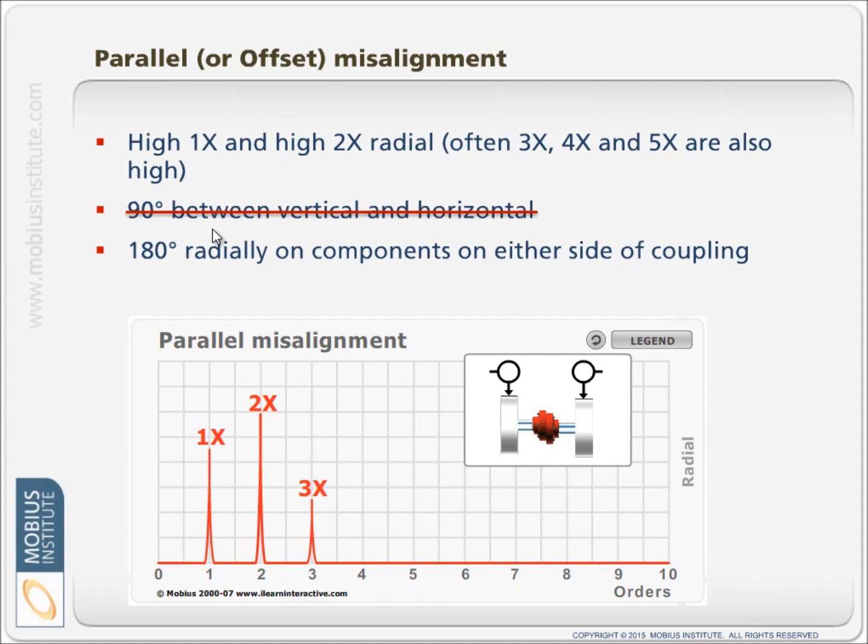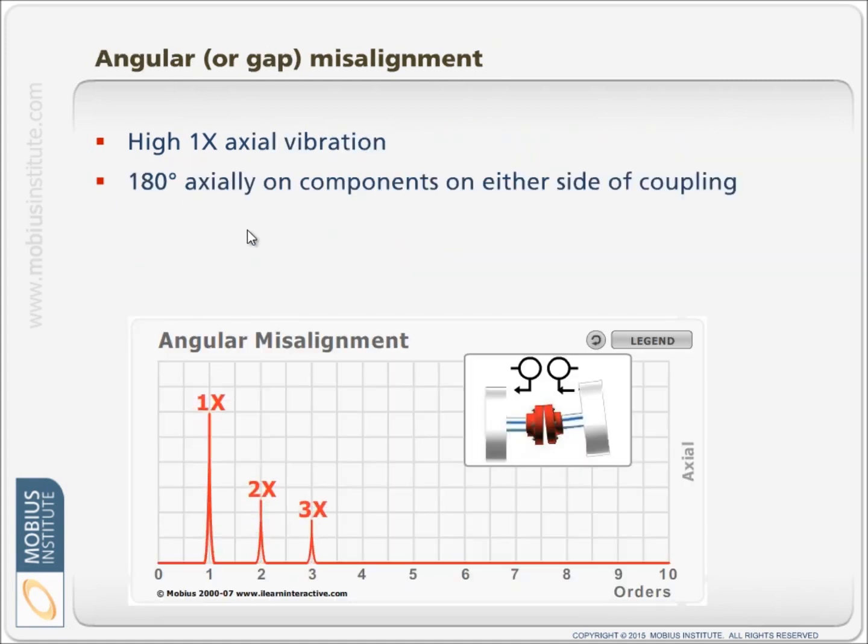We can also look at the phase difference on components either side of the coupling and see if we see either the 180 degrees opposite in the vertical direction or in the axial direction. The key is to make sure you're not just looking for that 2X vibration. And it's also important to note that we can have misalignments without the vibration changing in a characteristic way.